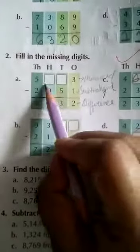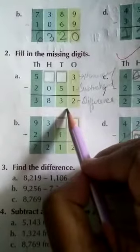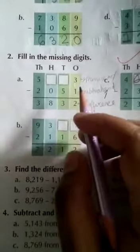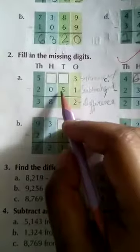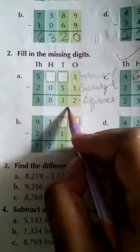So minuend, 2 digits are not there, 100th place and 10th place, but subtrahend and difference is given. So in previous class I have shown you when we are going to check the answer, what we are doing? We are adding those, sorry, subtrahend and difference, isn't it? So now I am going to solve here.